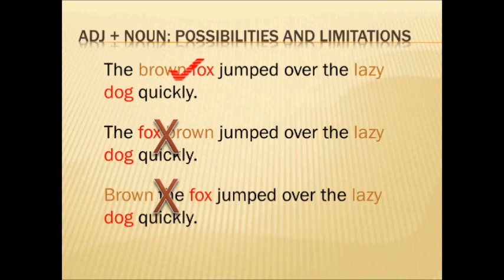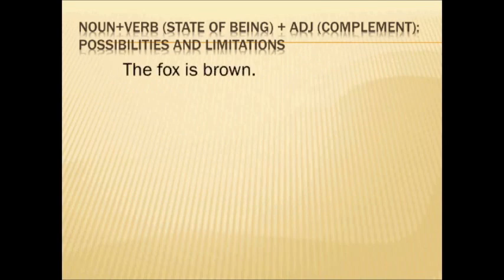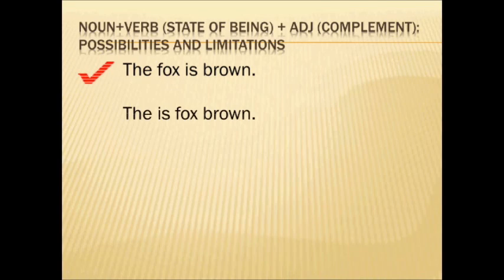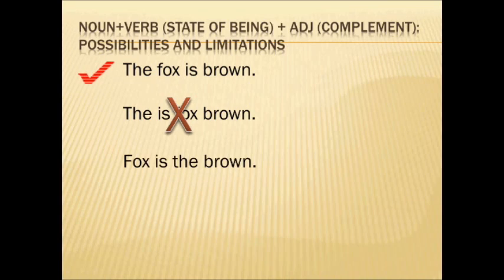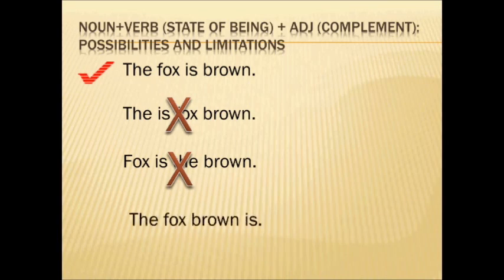These are things you may already know intuitively, but perhaps you've never really thought about why they work this way. When looking at the adjective as the complement of the sentence, the first example was correct. But we run into the same problems when we try to change the order. Even though the word brown and fox are close to each other, that is not how the relationship works when we use a state of being verb and an adjective complement. We recognize that the word 'the' would need to go in front of the word fox, and the word brown would need to follow the state of being verb.